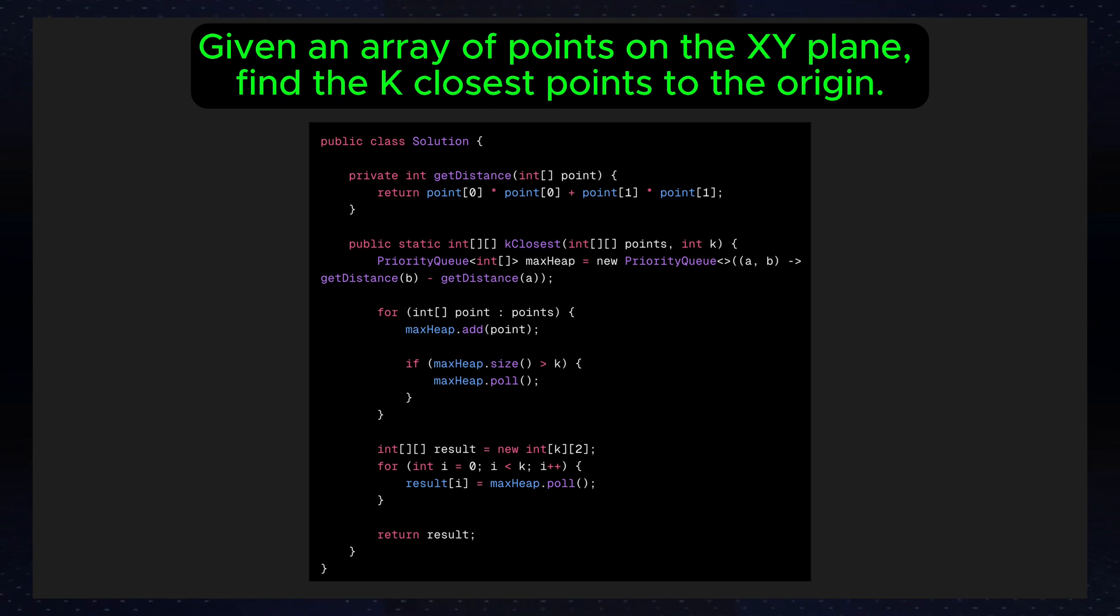Let's break down the time and space complexity. For each of the n points, we calculate the square distance which takes O(1) time and add the point to the heap which takes O(log k) time on average. Since we repeat this for all n points, the overall time complexity is O(n log k). For the space complexity, we are storing up to k points in the heap. So, the space complexity is O(k).